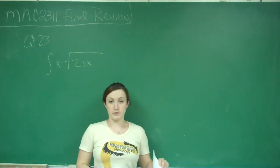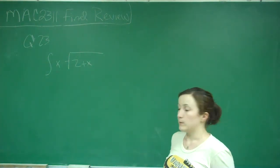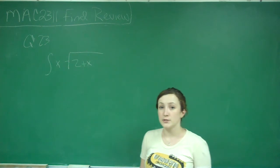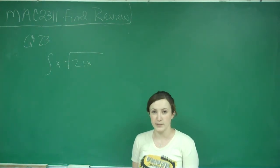This is problem number 23, a bonus question. It says integrate x squared times the square root of 2 plus x. We're going to have to use u-substitution, but also some trickier steps.